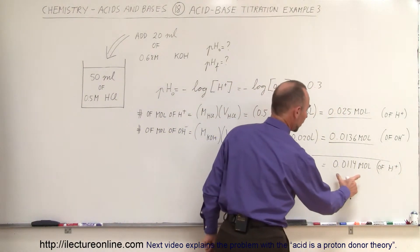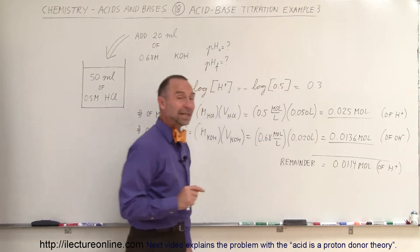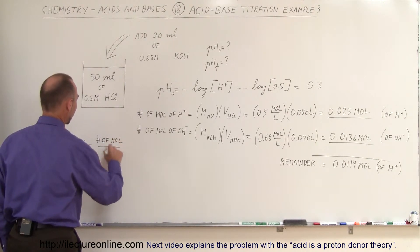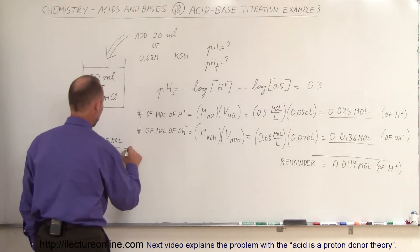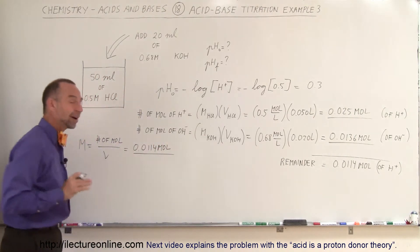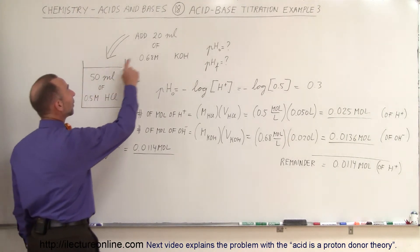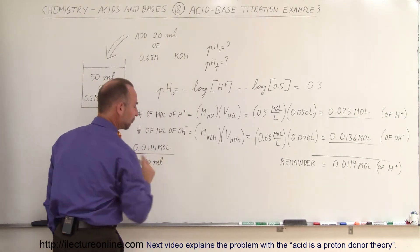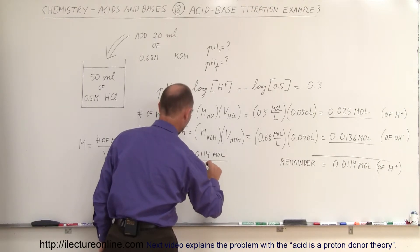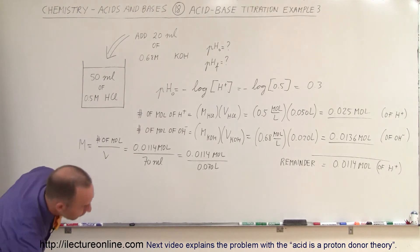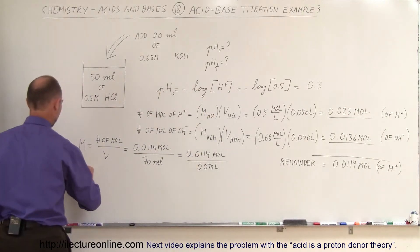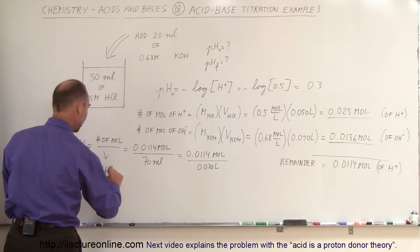Now that we know the remaining moles of hydrogen ions, we need the molarity of the final solution. Molarity equals moles divided by volume. We have 0.0114 moles of hydrogen ions, and the total volume is 50 milliliters plus 20 milliliters, which is 70 milliliters or 0.070 liters. So the new molarity equals 0.0114 divided by 0.070, which gives 0.163 moles per liter.